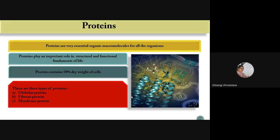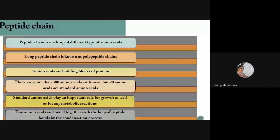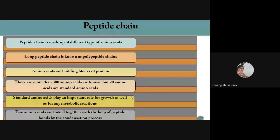Proteins are divided into three types according to their structure and function. Globular protein helps in the metabolism of any cell. Fibrous protein provides structural stability of cells and muscles. Membrane protein is used as receptors or hormones, helpful for metabolism. Proteins are made up of long amino acid chains, generally known as peptide chains. A peptide chain is made up of different types of amino acids. A long peptide chain is also known as a polypeptide chain.